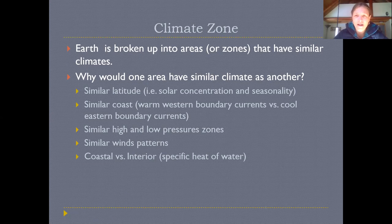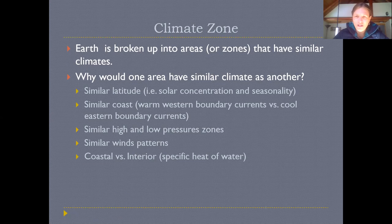We've talked about being in high and low pressure zones — higher pressure zones tend to be drier, lower pressure zones tend to be stormier. We've also learned about frontal uplift and convergent uplift causing precipitation. Wind patterns also play a role, as does the influence of specific heat: being close to a big ocean makes for a more moderate climate, because the ocean absorbs energy in summer and slowly releases it in winter.